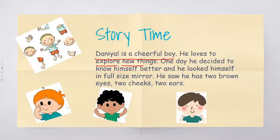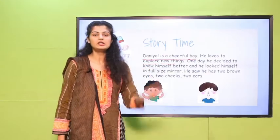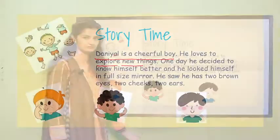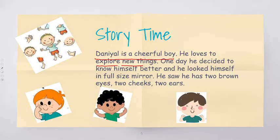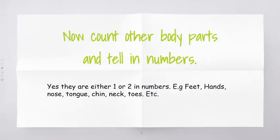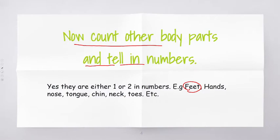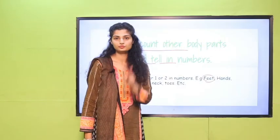Can you tell me what else we have in our body in two? Now count the other body parts and tell the numbers — they are either one or two. Feet — let's count the feet. How many feet do you have? Count them. One and two. Two feet.